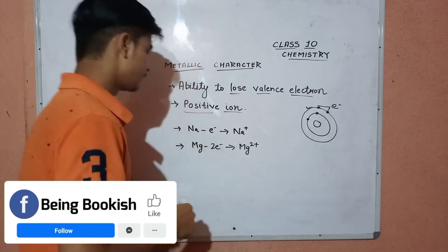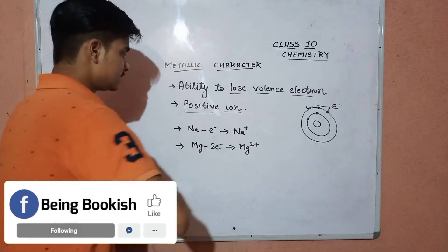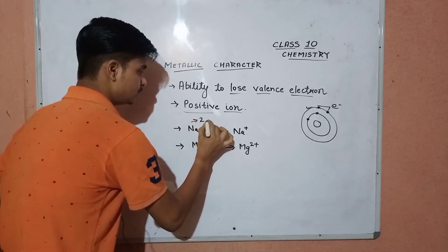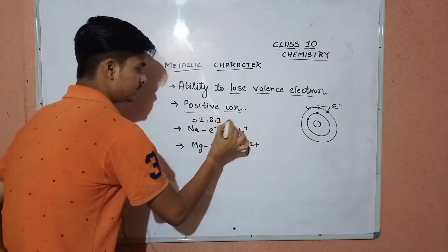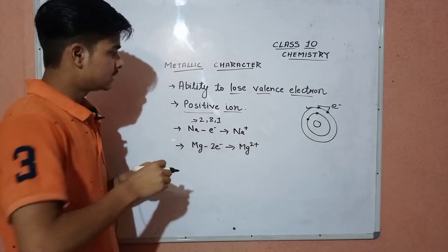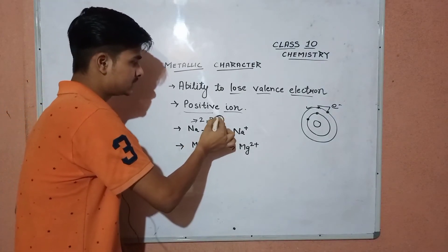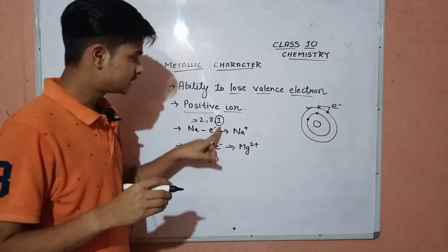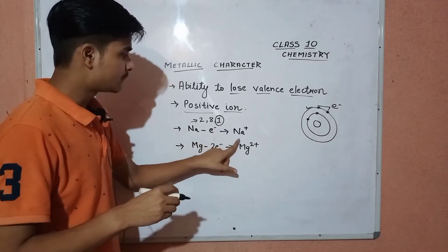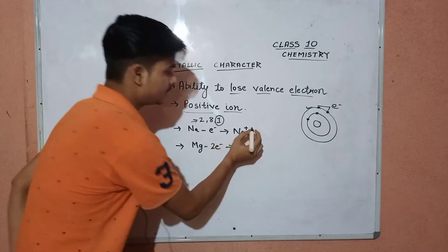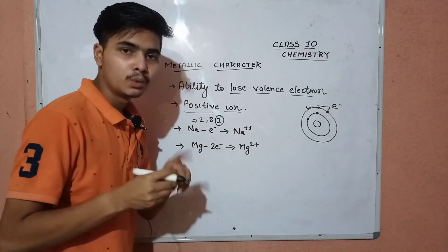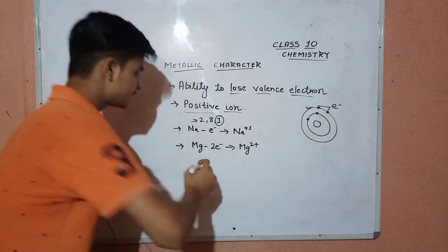Let us look at some examples. Take sodium — the electronic configuration of sodium is 2, 8, 1. Sodium can lose this one electron because it is the valence electron. After losing it, sodium becomes a positive ion: Na⁺, because it has lost one electron.